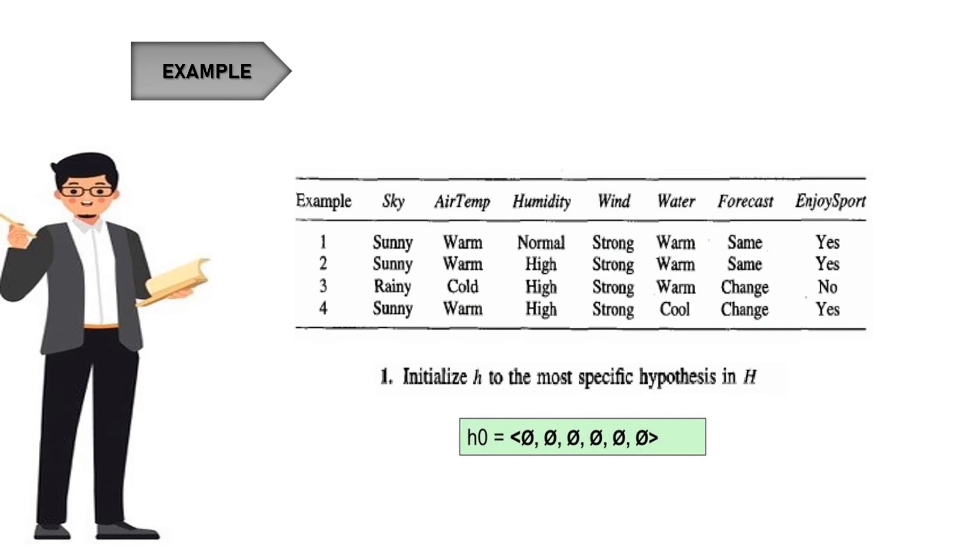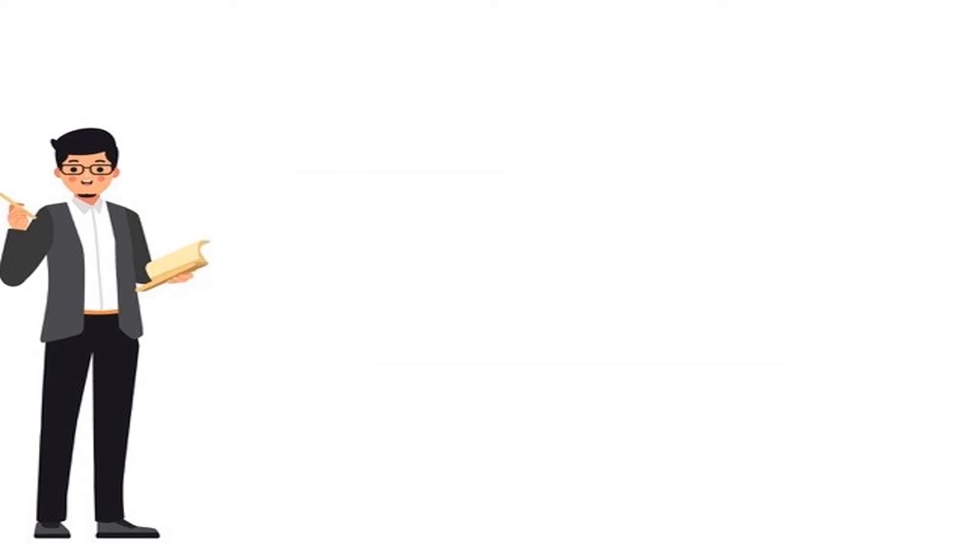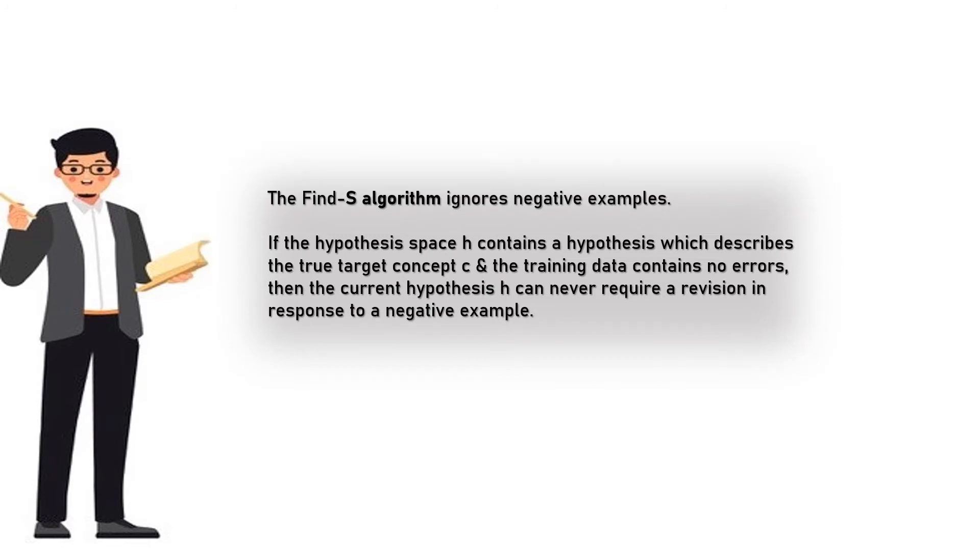Let's consider with an example. The Find S algorithm ignores negative examples. If the hypothesis space H contains a hypothesis which describes the true target concept C and the training data contains no errors, then the current hypothesis H can never require a revision in response to a negative example.